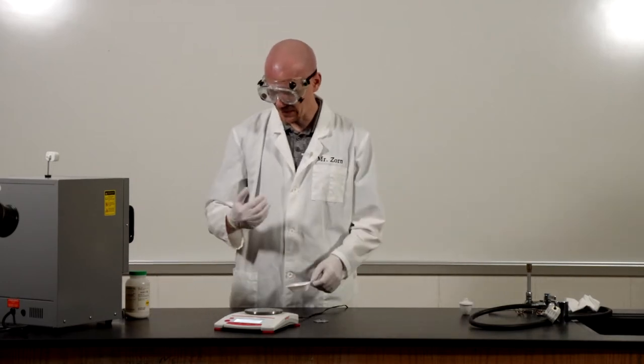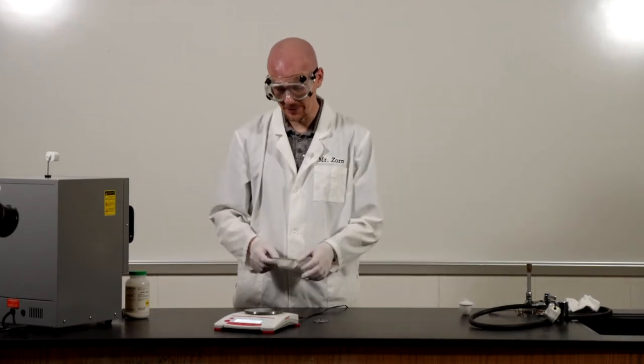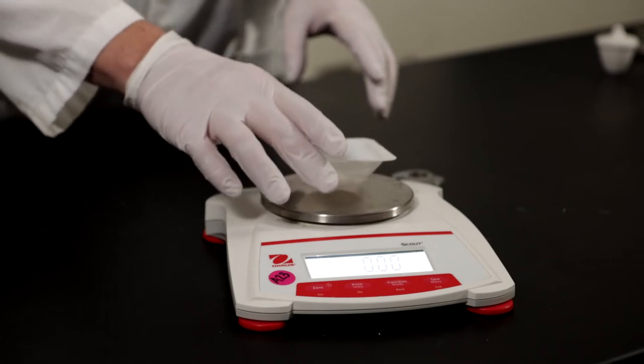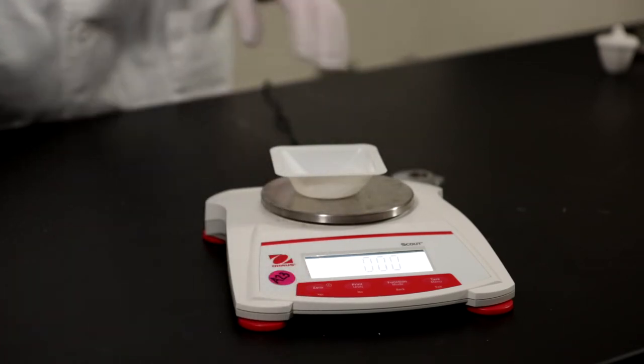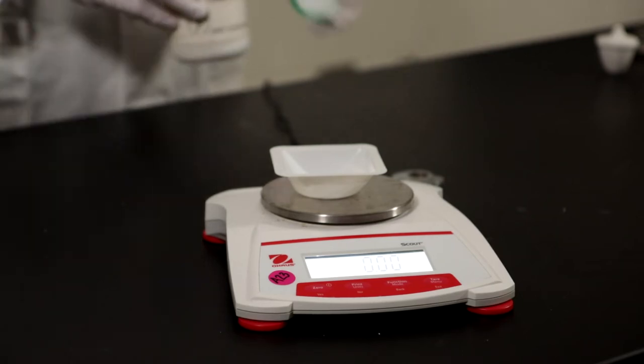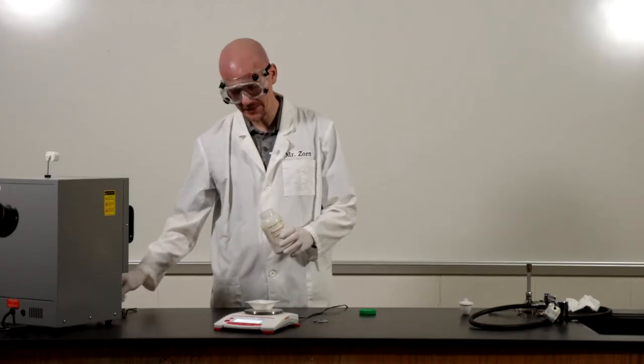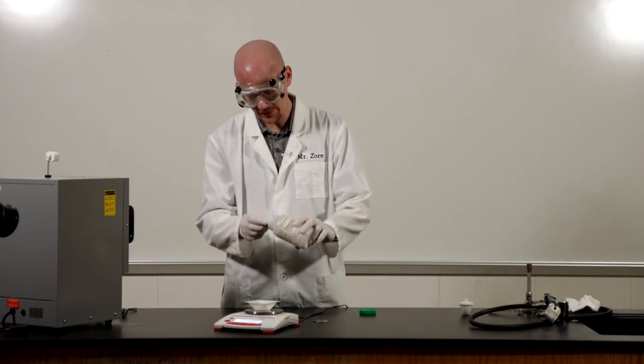All right, next what I'm going to do is I'm going to mass out a sample of sodium bicarbonate. So I'm going to go ahead and put my wayboat on the balance here and zero that out. Okay, and then I'm going to take a sample of sodium bicarbonate. It doesn't have to be exactly five, but I want to get it close to five grams.